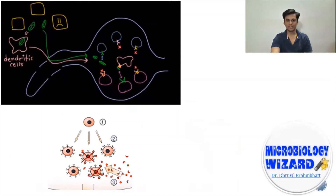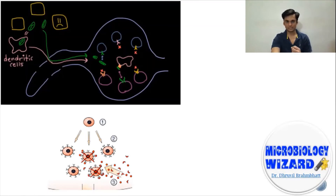T cells are unable to identify bacteria when they are freely floating, so they require antigen-presenting cells to show pieces of bacteria to them, and only specific T cells that can recognize the pathogen bind and react to it. One of the T cells recognizes the specific invader and reacts. Meanwhile, B cells are made to react directly to this bacterium without an antigen-presenting cell — specifically the one that is specific to this bacterium. Additionally, self-reactive B and T cells are eliminated in their developing stages, whereas other non-specific B and T cells will remain inactive and unaware.